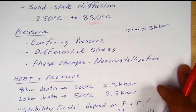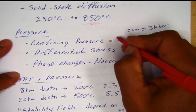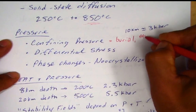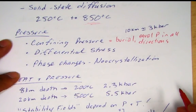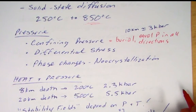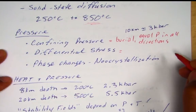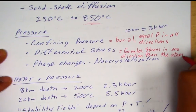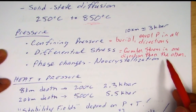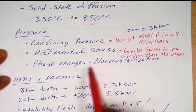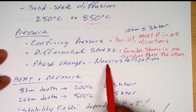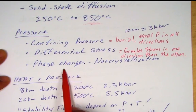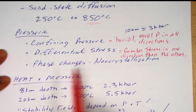In terms of pressure, remember confining pressure — you can think of this as burial with equal pressure in all directions. It's like taking a cube and pushing it into the crust where it shrinks to a smaller cube squeezed in all directions. Whereas differential stress is greater stress in one direction than the other — similar to the compression and shearing I described earlier. Pressure can also cause phase changes and neocrystallization, including pressure solution and recrystallization, and can produce the more compact polymorph form of a mineral.